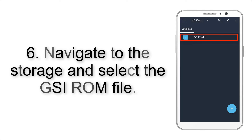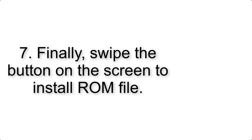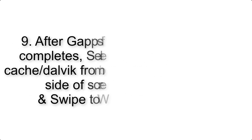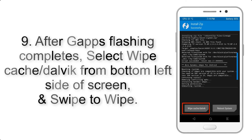Step 5: Go back to the recovery main screen and tap on the Install button. Step 6: Navigate to the storage and select the GSI ROM file. Step 7: Finally, swipe the button on the screen to install the ROM file.